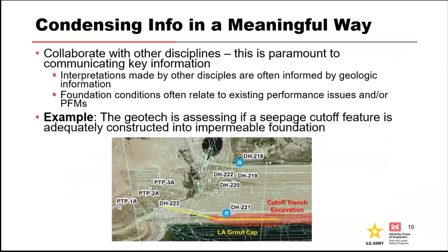Here's another example of condensing information in a meaningful way. You're layering your information — where your drills are, where the cutoff trench is, where there's a possible issue. This is a grout cap. Did they actually carry the cutoff trench to where it needed to be? They're assessing if the seepage cutoff feature is adequate into an impermeable foundation. You would look at all your construction photos, put in where the as-built features are, layer all your boring information, and look at your instrumentation to see if you actually have a cutoff at this location — or are the instrumentation readings the same all the way through, indicating no cutoff at all.